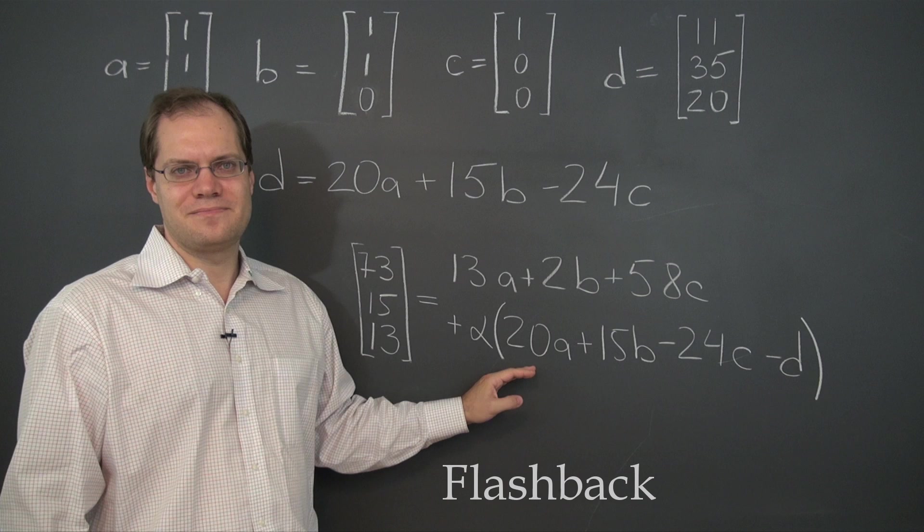y equals 2 plus 15 alpha, z equals 58 minus 24 alpha,